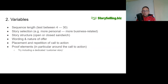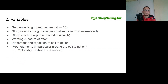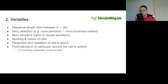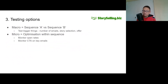Another variable is proof elements, particularly around the call to action. You might test including different testimonials or case studies — perhaps an email near the very end of the sequence where you just share the results you've delivered for your clients. You could try including that in the sequence, then have a version without it, just to see the impact. We tend to assume that sharing more customer stories will help our results, and that may be the case — but it may not, so we have to test it.